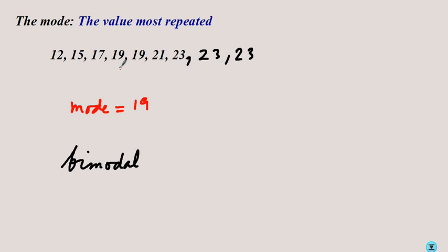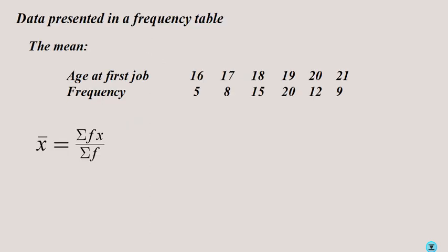If data is presented in a frequency table, in order to calculate the mean we have to do a different operation, but it's based on the same principle — the equal distribution of the total. Let's say that some young men and women were interviewed and asked about the age when they got their first job, and the data is summarized in a frequency table. This means that five people said they started working at age 16, eight people said their first job was obtained when they were 17, so basically there are 5 sixteens, 8 seventeens, and 15 eighteens, and so on.